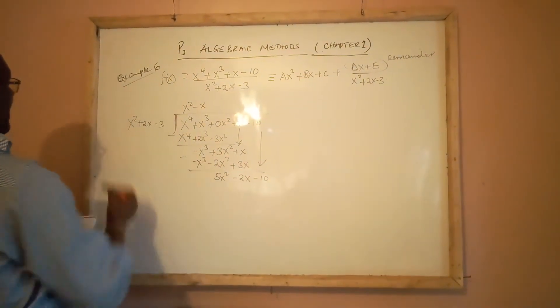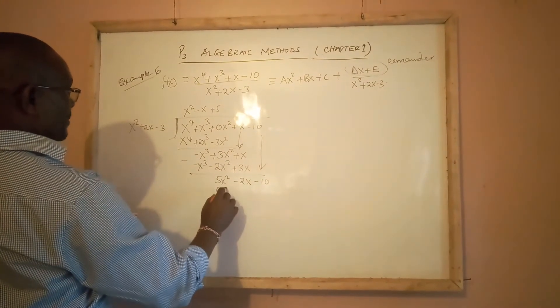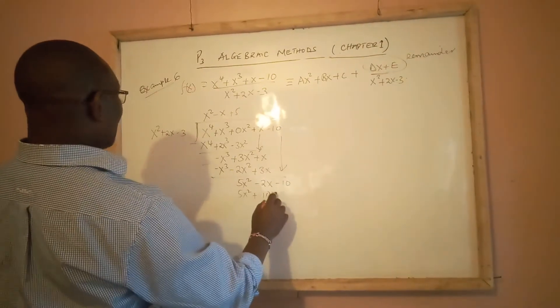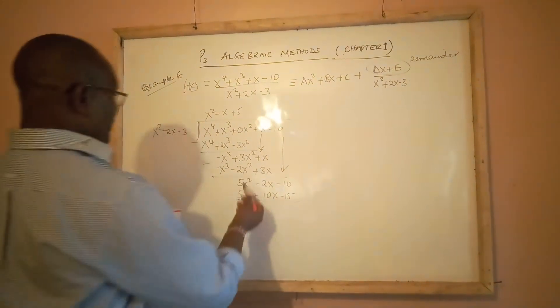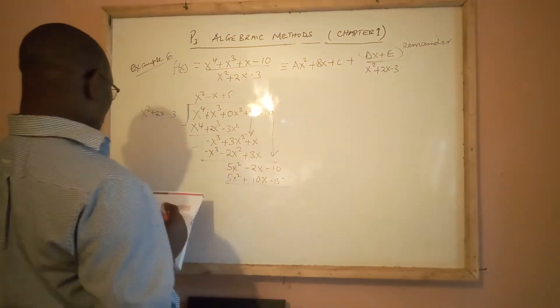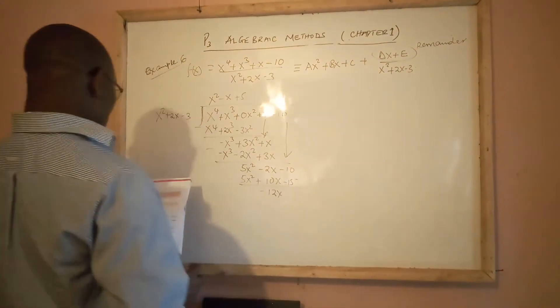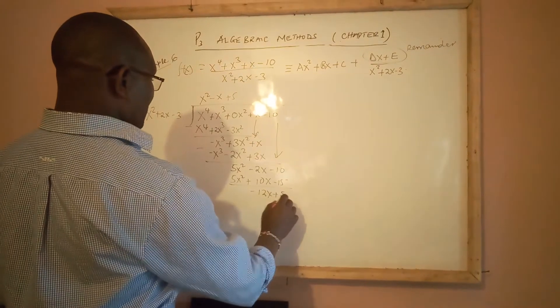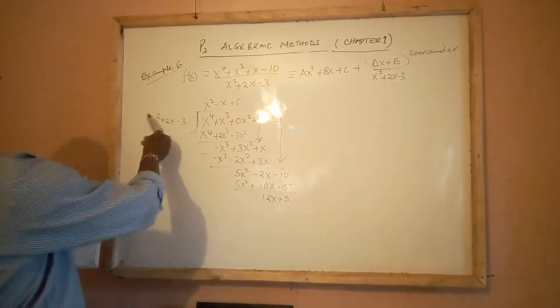5x^2 divided by x^2 is 5. Then multiply out: 5x^2 + 10x - 15. And therefore, we have that gives us 0. -2x minus 10x is -12x. -10 minus minus 15 is plus 5. And because x^2 cannot divide -12x + 5, then this is now considered to be the remainder.